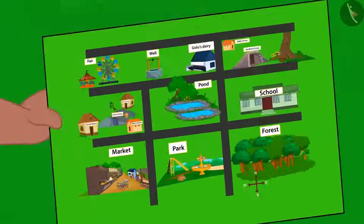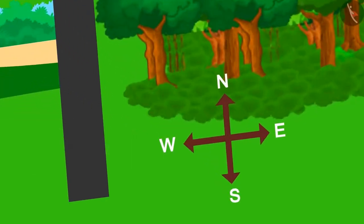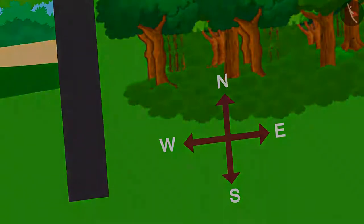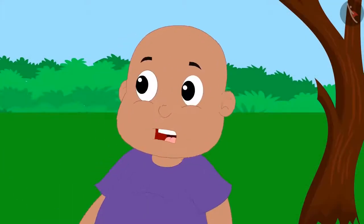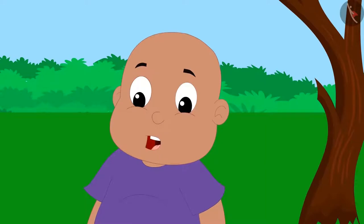But take a look. A compass like this is given on every map. Saying this, Raju showed Bablu the compass drawn on his map. But how are we supposed to use this and what directions are these, Raju?